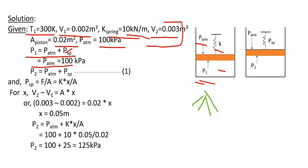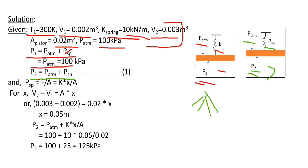Now when heat is added to the air, the air will expand and the piston will displace by some distance. At that point, P2 is the pressure of air inside the cylinder, and this pressure P2 is balanced by atmospheric pressure and spring pressure. So P2 equals atmospheric pressure plus spring pressure.